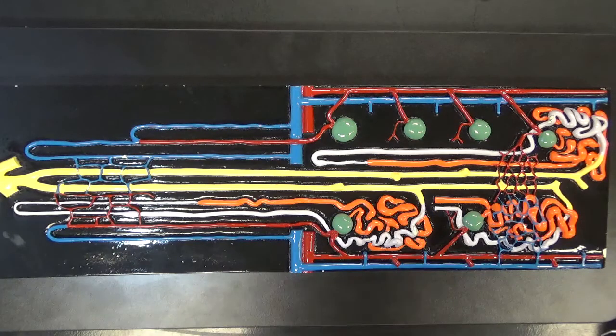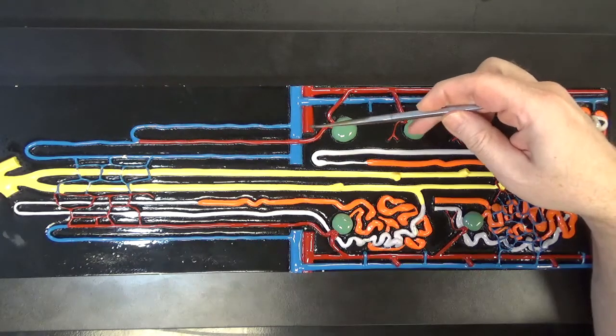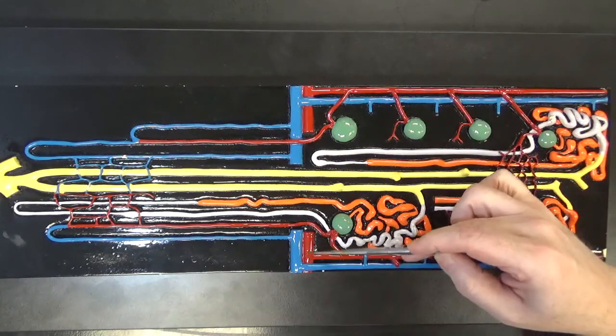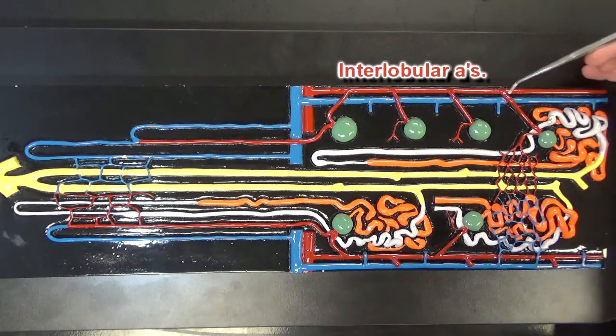Here we have a nephron plaque and let's start with the blood vessels first. These blood vessels right here would be arcuate arteries and branching off the arcuate arteries we would have the interlobular arteries, also known as cortical radiate arteries.